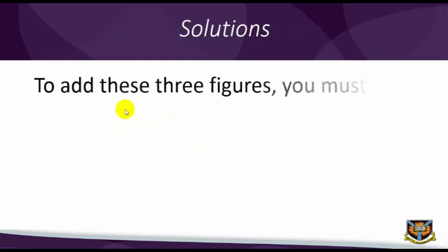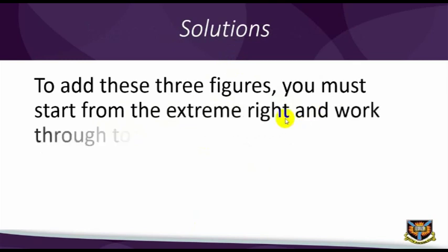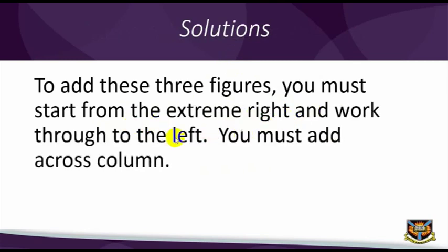To add these three figures, you must start from the extreme right and walk through to the left. You must add across column. If after adding a column, you get a two-digit figure such as 20, write the last digit 0 below that column and add the first 2 to the next column until the operation is completed. 4322 plus 378 plus 467 is equal to 5167.